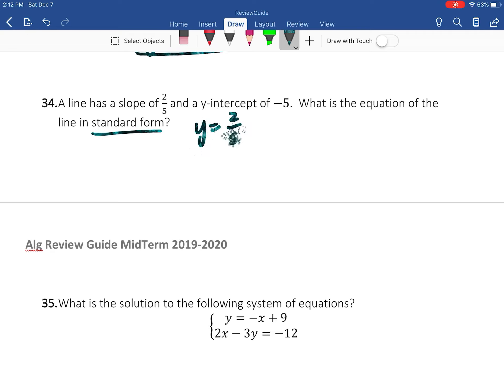So I'm going to say y = (2/5)x - 5. I'm going to move my x over. So this is going to become -(2/5)x + y = -5.